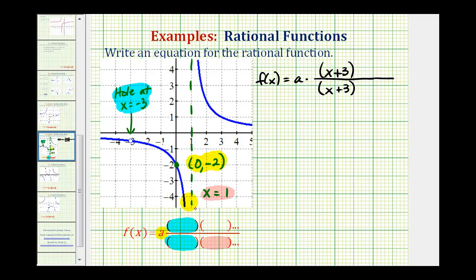And because we have a vertical asymptote of x equals one, one must be a zero of the denominator. Or the value of x equals one must make the denominator equal to zero. Therefore, we must have a factor of x minus one in the denominator.